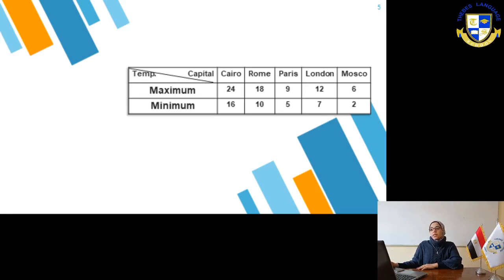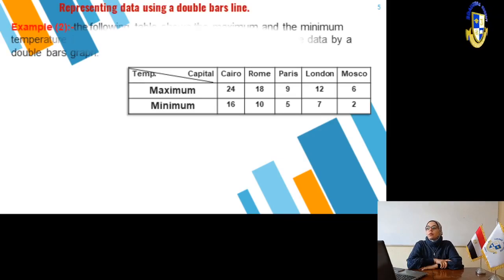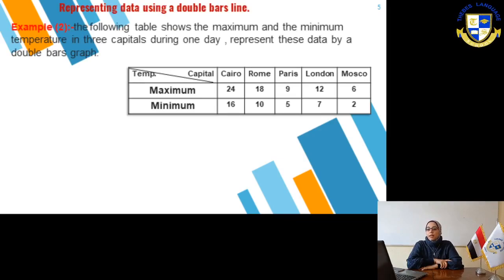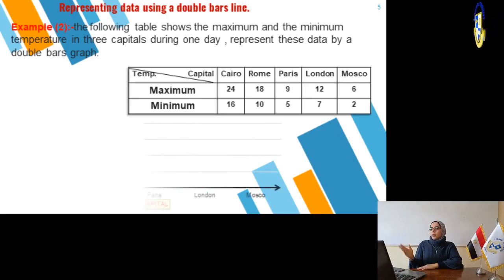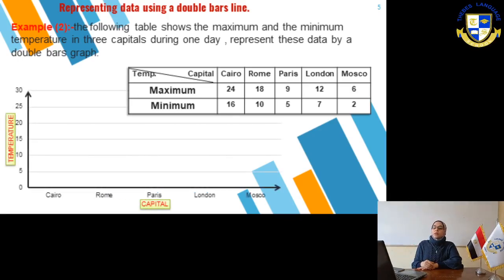Next example. Represent the data using the double bar line. Example number two. The following table shows the maximum and the minimum temperature in three capitals during one day. Represent these data by a double bars graph. Here, we have some capitals: Cairo, Rome, Paris, London, Moscow. And we have their temperature - the maximum and the minimum of it. We want to represent these data by a double bar.